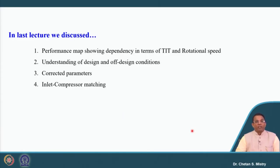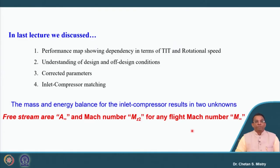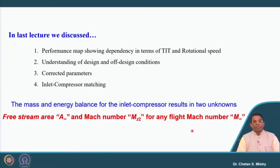We started with component matching in terms of inlet and the compressor, and we found that based on mass and energy balance the inlet and compressor result in two unknowns: one is the free stream area A-infinity and Mach number, and the axial Mach number at the entry of the compressor. For any flying Mach number M-infinity, we realized that M-infinity affects both A-infinity and the axial Mach number entering at the face of the compressor.